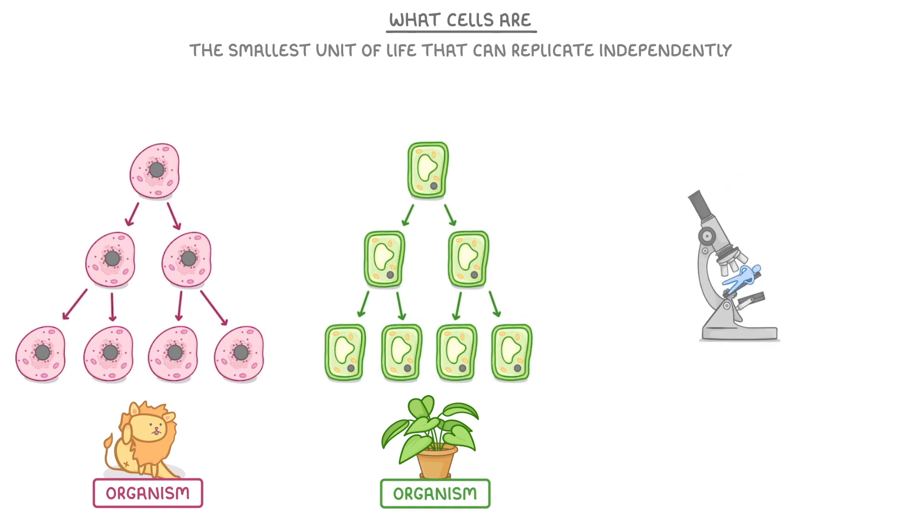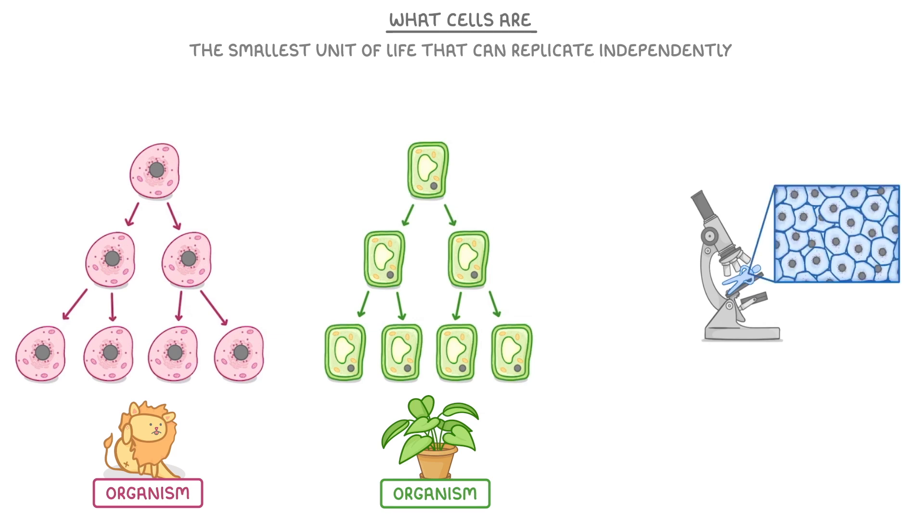To see what I mean, imagine we took a human and looked at him closely under a microscope. We'd see that he's made up of cells. The skin contains skin cells, the blood contains blood cells, and so on. In total we contain hundreds of different types of cells, and it's thought that an adult contains over 40 trillion cells all together.